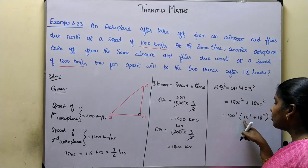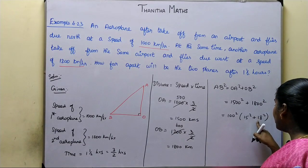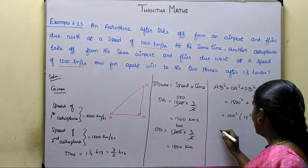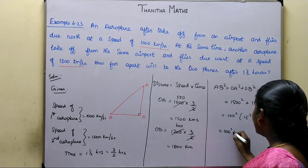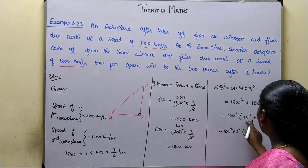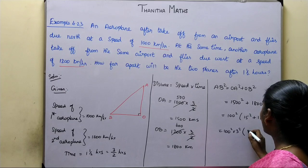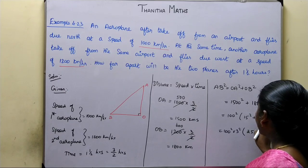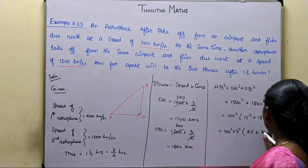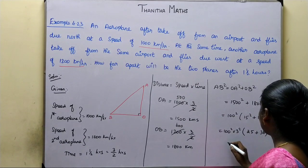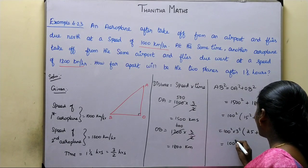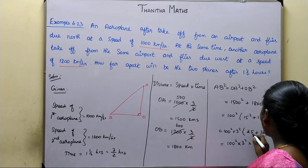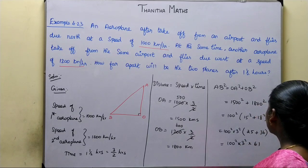15 is 3 into 5, and 18 is 3 into 6. So 3 square is common. This can be written as 100 square into 3 square into 5 square plus 6 square — that is 25 plus 36 — which gives 61.